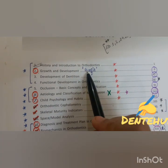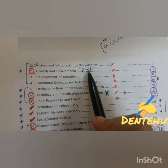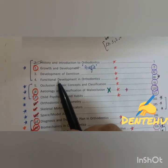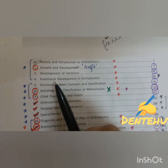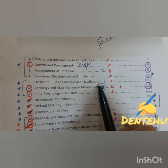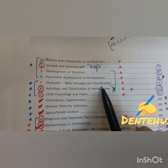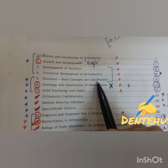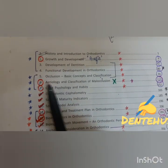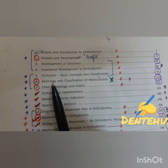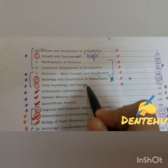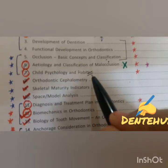If possible, do consult Contemporary Orthodontics by Dr. Proffit — this is again an important topic. Development of dentition and functional development and occlusion overlaps with DADH and PEDO. So if you have already done those in those subjects, there is no need to redo these sections. Child psychology and habits also overlaps with PEDO, so no need to do that here.